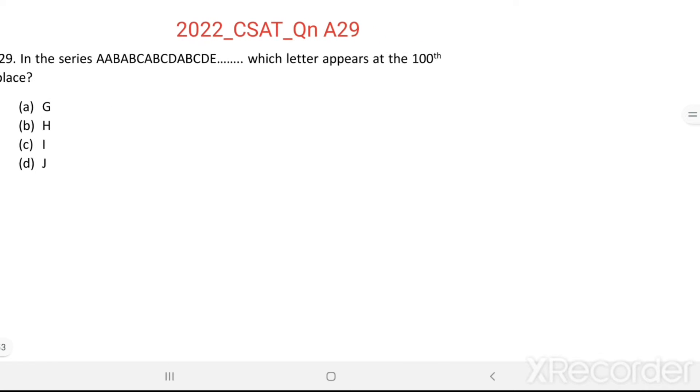Here we have a series A, AB, ABC, ABCD, ABCDE, ABCDEF. So it is progressing like this, which is the letter in the 100th place.